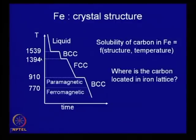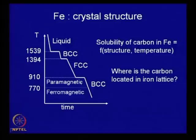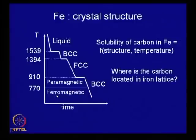Next, at a lower temperature around 1394°C, this body-centered cubic structure gets converted into a face-centered cubic structure. So you have a high-temperature BCC structure and a low-temperature body-centered cubic structure. If you cool further below, that initial BCC structure does not exhibit magnetic property — it is paramagnetic. If you cool below a temperature called the Curie temperature, which is around 770°C, below this it is ferromagnetic in nature.